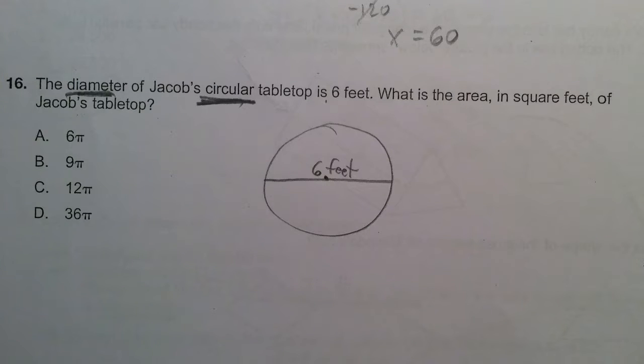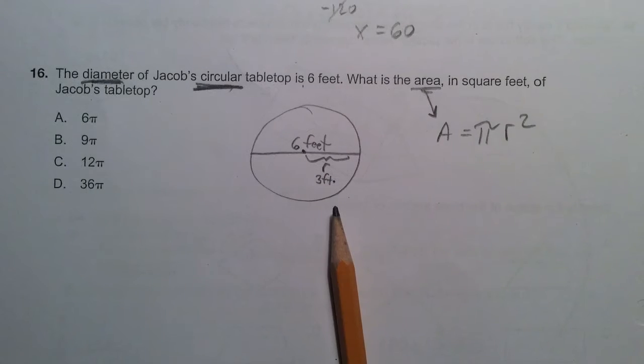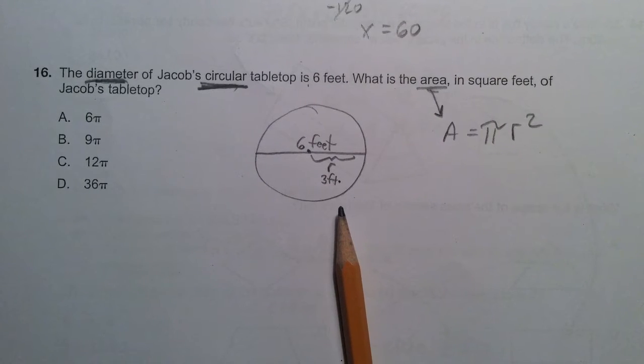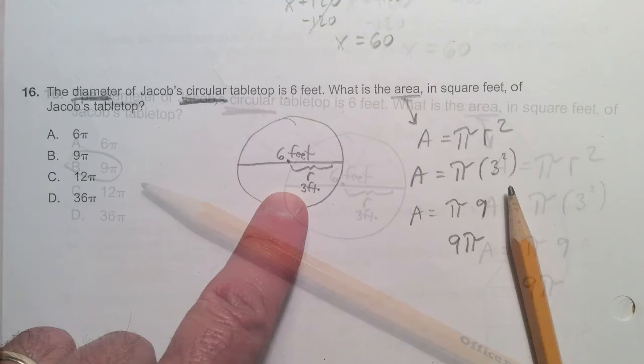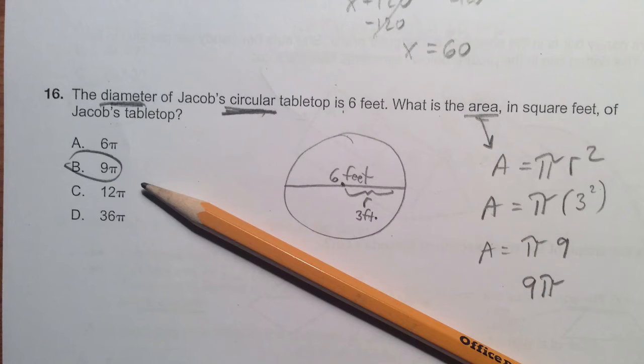Number 16 is about a circle with a diameter of six feet. That means its radius is only going to be three feet. So I can use the formula for area A equals pi r squared, where the radius is three. So you square the three and get nine, and nine times pi would be your answer. Letter B.